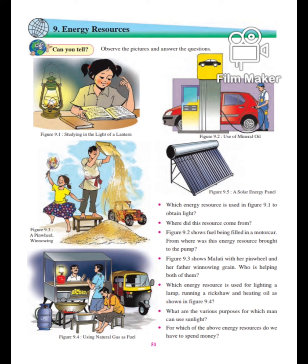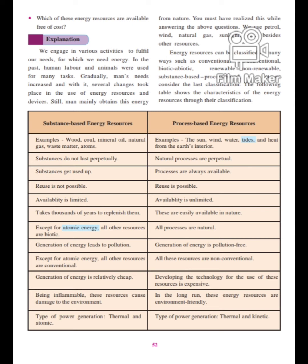Next, which energy resource is used for lighting a lamp, running a rickshaw and heating oil as shown in figure 9.4? What are the various purposes for which man can use sunlight? For which of the above energy resources do we have to spend money? And the last question: which of these energy resources are available free of cost?